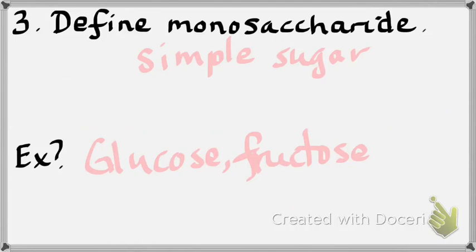Fructose, or corn syrup, is used a lot because raising corn is cheaper than raising sugar cane. Sugar in general is bad for you — it can lead to weight gain, diabetes, and obesity. What drove corn syrup to be popular is economics. What's a disaccharide? Two simple sugars — DI means two.